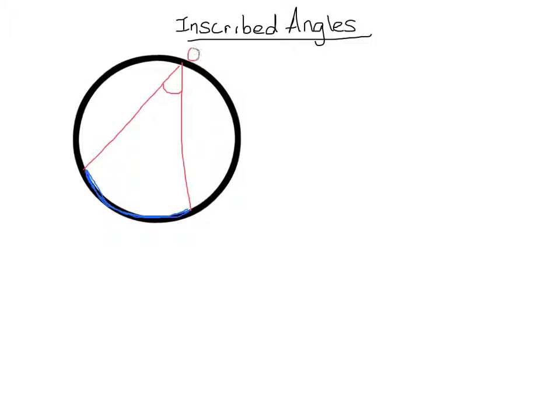Let's give it some names. Let's say this is Q, R, S. I could say that arc RS is intercepted by angle RQS.